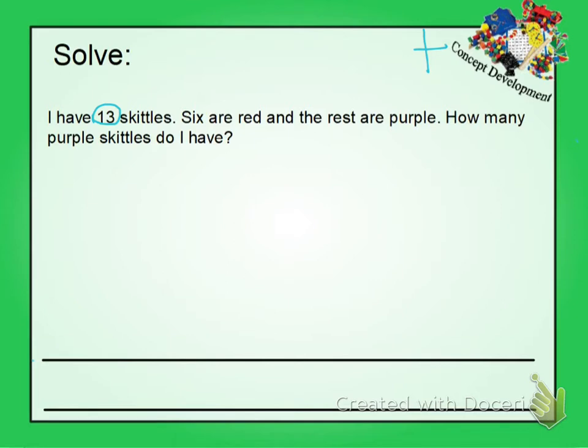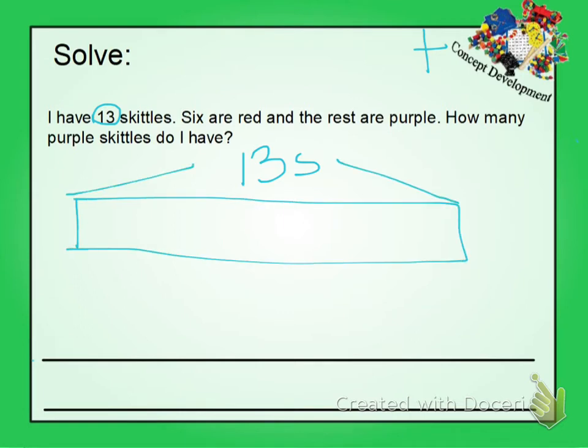So I can draw 13, or you can just write the 13 Skittles and just draw the box to where you would have drawn it. You could draw it if you need to. If you don't need to, don't draw it. Six are red, so I'm going to draw, not draw six, I'm just going to write six red. And the rest are purple.